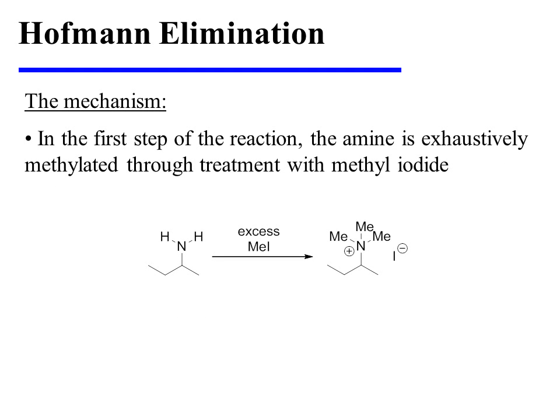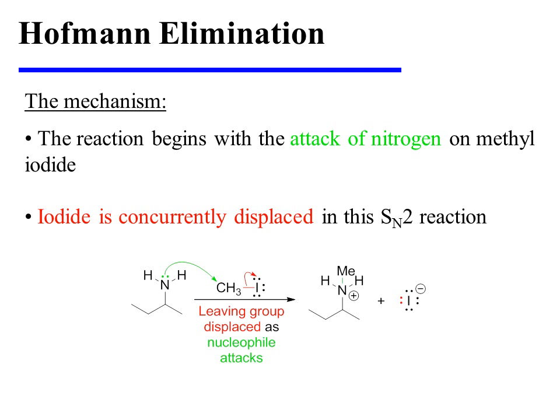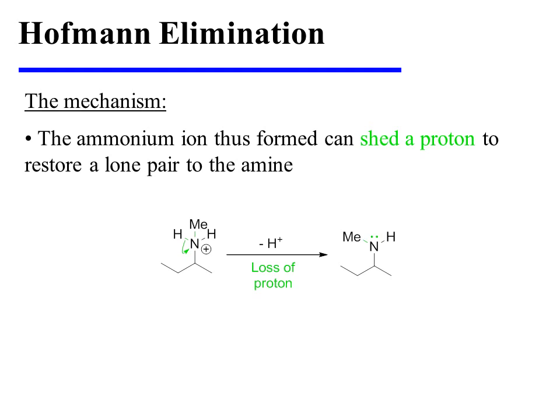In the first step of the reaction, the amine is exhaustively methylated through treatment with methyl iodide. The reaction begins with the attack of nitrogen on methyl iodide, and iodide is concurrently displaced in this SN2 reaction.